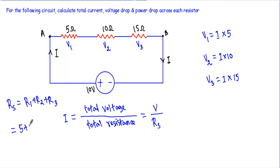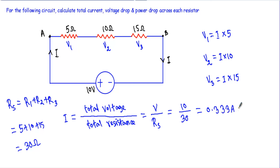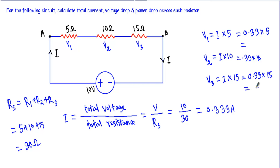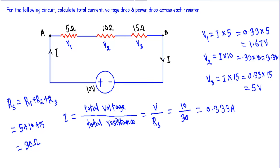The total resistance RS equals 5 plus 10 plus 15, which equals 30 ohms. The total current I equals the total voltage divided by the total resistance: 10 volts divided by 30 ohms, giving I equals 0.333 amperes. The voltage drop across the 5 ohm resistor: V1 equals 0.333 times 5 equals 1.67 volts. Across the 10 ohm: V2 equals 0.333 times 10 equals 3.33 volts. Across the 15 ohm: V3 equals 0.333 times 15 equals 5 volts.